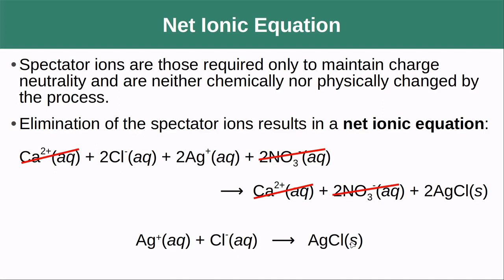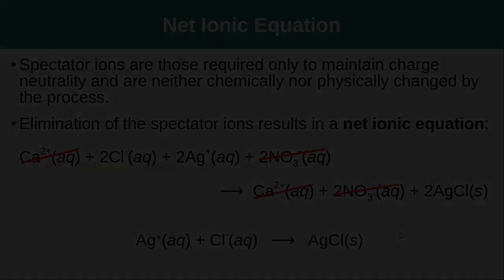And what I can do is I can actually just get rid of them because they didn't change, and then I get what is known as the net ionic reaction. And this gives you a little bit better description about what actually happened during this reaction. We know that silver, a silver ion came, found a chloride ion, and it formed a silver chloride solid.